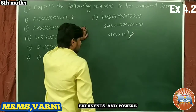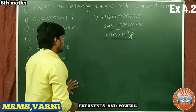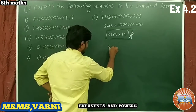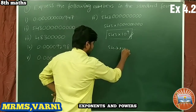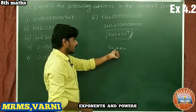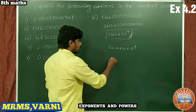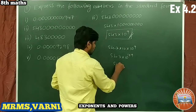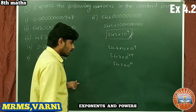We can continue further. If I write 54.3, I have moved the decimal point one place, so I multiply by 10. The 10^9 stays as is, and we get 54.3 × 10^(1+9) = 54.3 × 10^10.